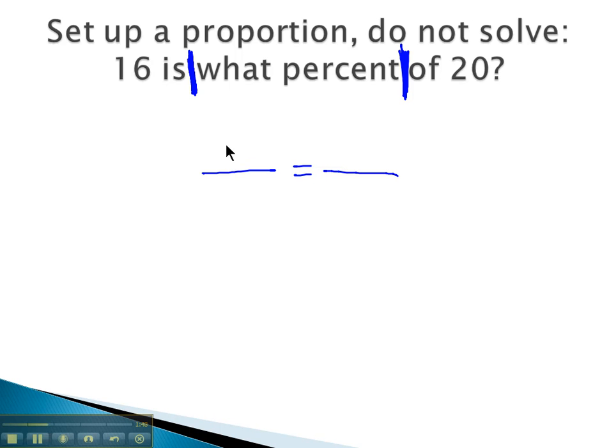The first block here, is, is with the number 16. That's our is. Over of. Of is with the number 20.